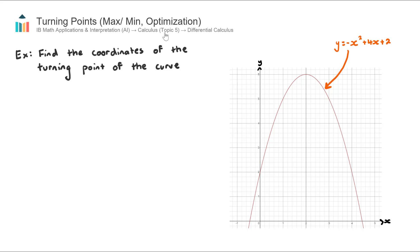We're currently in topic 5 calculus in the AI course. In topic 5 there are two main subtopics: differential calculus and integral calculus. Inside differential calculus there are two types of applications. The first one is finding the equations of tangents and normals, and the second is finding the coordinates of turning points which leads into optimization, which is what we're talking about in this video.